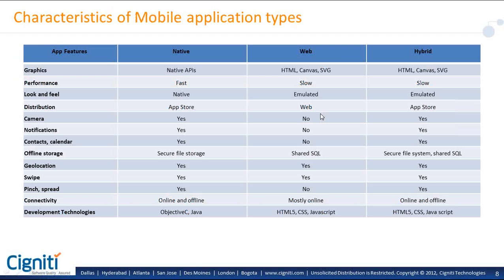To see the characteristics of different mobile applications, here are the challenges compared to web automation. Most people have been working in automation and are well versed with web automation. In web automation, we mostly take into consideration the combinations of different browsers and different operating systems that are involved.